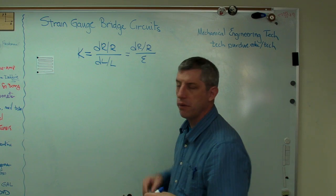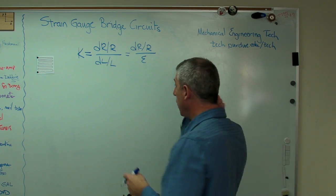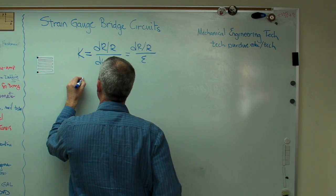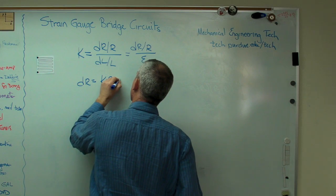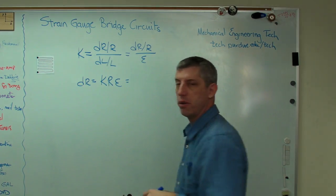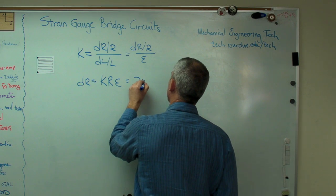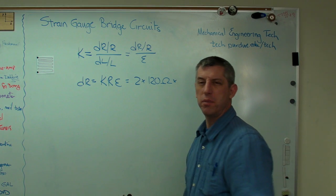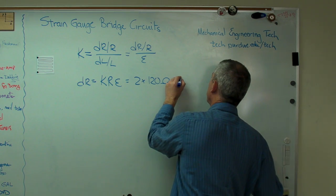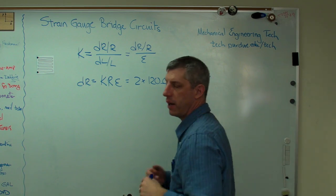Now, let's say here I want to figure out what the change in resistance of a strain gauge is. I can say that change in resistance equals K R epsilon. I just multiplied through some stuff there. K is always about 2, so let's call that 2. R is 120 ohms, and I've got to pick a strain. Let's pick 250 microstrain. So that's 250 times 10 to the minus 6.